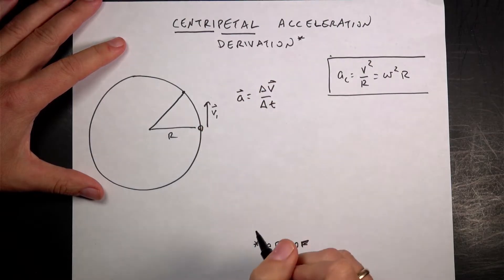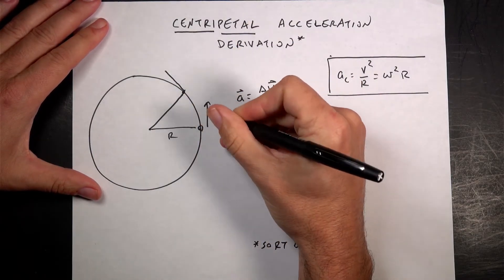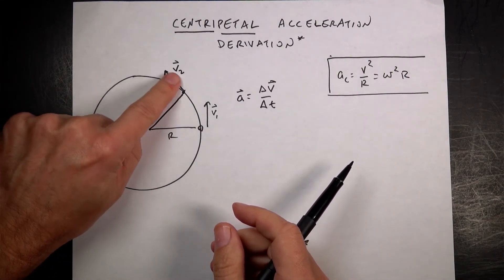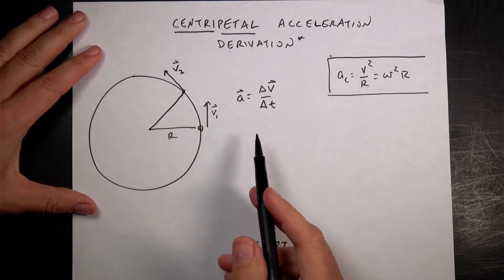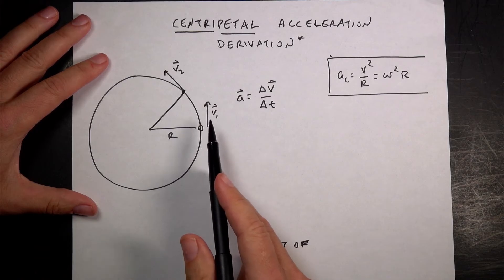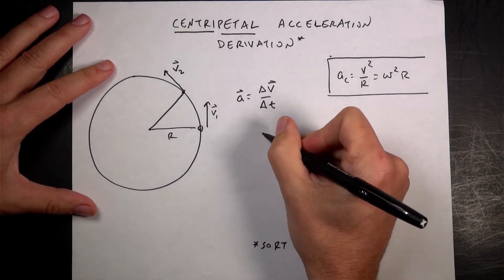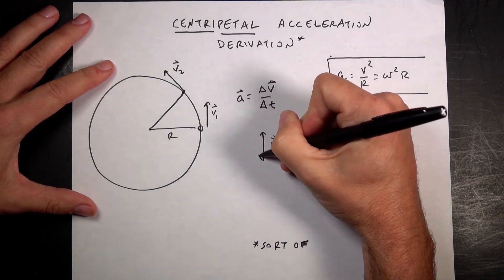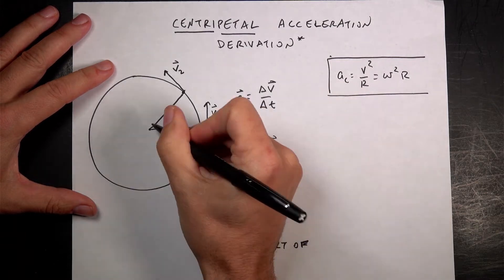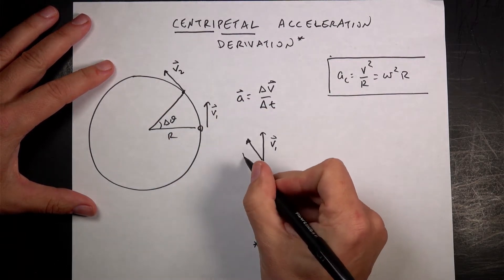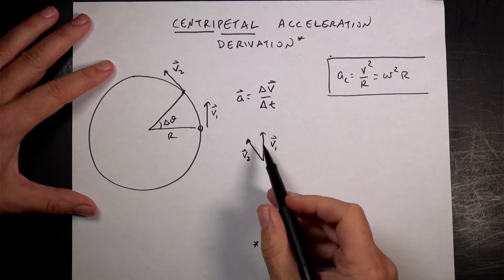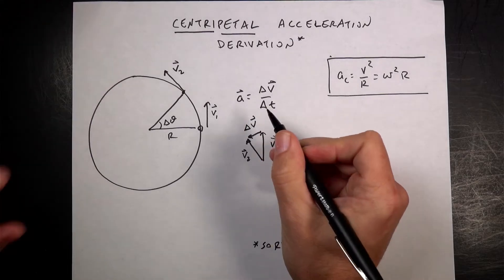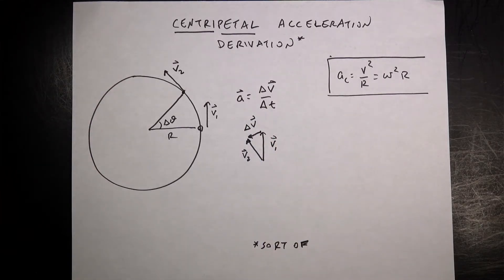Remember this is a small angle — I'm drawing it big. Here's v2; it should be the same length as v1 but in a different direction, since the velocity is always tangent to the curve. Since it's moving at a constant speed, v2 and v1 have the same length. To find delta v I find the vector difference between v1 and v2. I redraw them starting at the same spot — there's v1, there's v2 — this angle I'll call delta theta. Then v2 minus v1 is the vector from the end of v1 to the end of v2, and that's delta v.